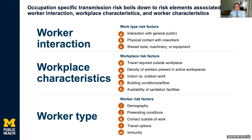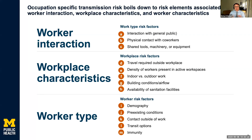We've distilled this down to eight factors, displayed as worker interaction and workplace characteristics — factors directly linked to the risk of coming into contact with an infected person or working in high density with people we don't necessarily know are infection free. These include: interaction with the general public, physical proximity to coworkers, whether you share tools, machinery, or equipment, whether you're required to travel to many different workplaces, the density of workers present, whether workers are grouped due to the nature of the work, indoor versus outdoor work, conditions and airflow in the building, and the availability of sanitation facilities.